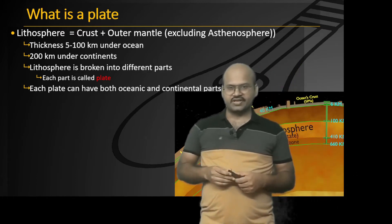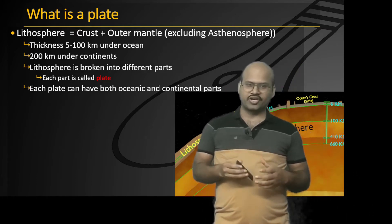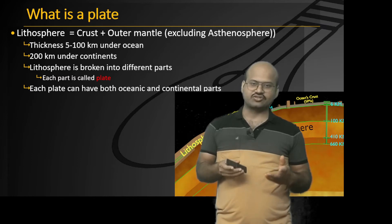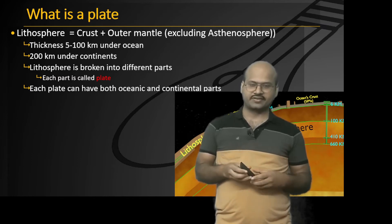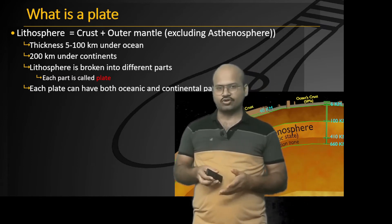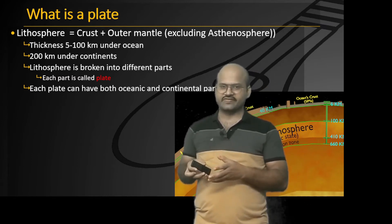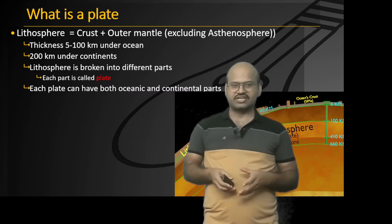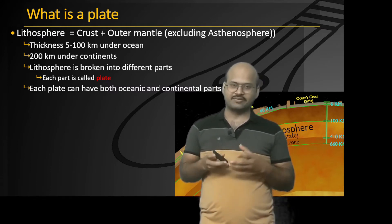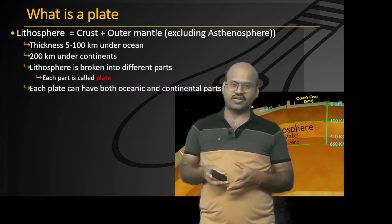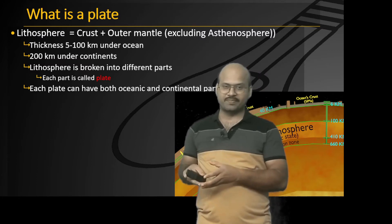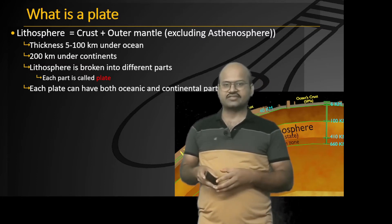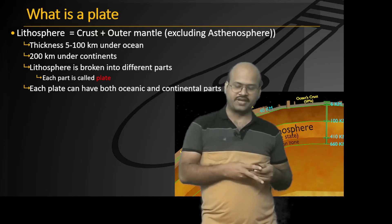The lithosphere is broken into different parts, and each broken part is called a plate. Each plate can have both oceanic and continental parts. Based on the dominant type — whether continental or oceanic — we call it an oceanic plate or a continental plate.